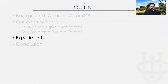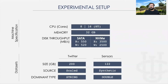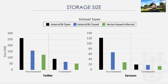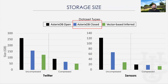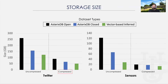Next, we're going to talk about our experiments. The machine we use has eight physical cores and 16 logical ones with 32 gigabytes of memory. We use two storage devices, SATA SSD and NVMe SSD, each with different read and write throughputs. We use two data sets: the first has 200 gigabytes of tweets, and the other has 122 gigabytes of sensor readings. The Twitter data set is mostly string data, and the sensors data is mostly numeric. We compare three dataset types: i6db-open, where we only declare the primary key; i6db-closed, where we declare all the fields; and finally, the vector-based inferred type, which utilizes our Tuple Compactor framework to infer the schema and compact the record. We also compare the impact of page-level compression using the Snappy compression scheme as a way to reduce storage overhead.